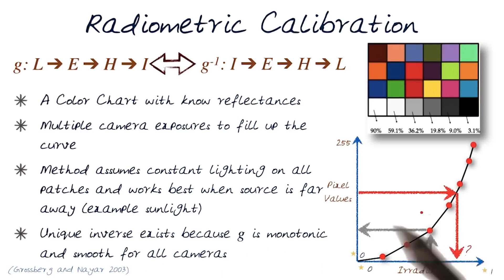A unique inverse exists for G because in this case G is monotonic and smooth for all types of cameras. And we will model this for different cameras, and this allows us to compute this.